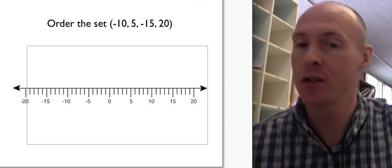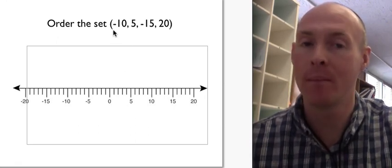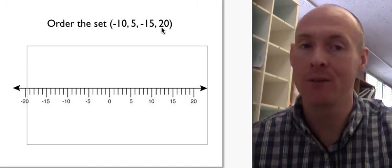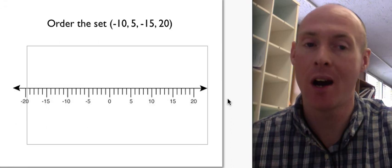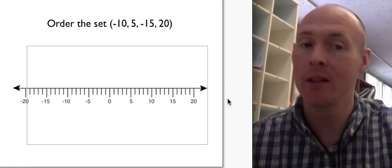What I want you to do is use the number line. First, plot out all of your numbers. Show me where negative 10, 5, negative 15, and 20 are on the number line. Pause the video and go ahead and do that.